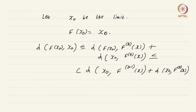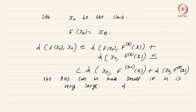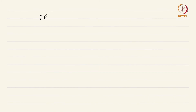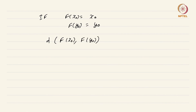Because fⁿ(x) converges to x₀, the right-hand side can be made small if n is very large. In other words, d(f(x₀), x₀) is just 0, which means f(x₀) = x₀. So we have found the required fixed point. Now, if f(x₀) = x₀ and f(y₀) = y₀, then d(f(x₀), f(y₀)) ≤ c·d(x₀, y₀), and because c < 1 that is simply not possible unless x₀ = y₀.